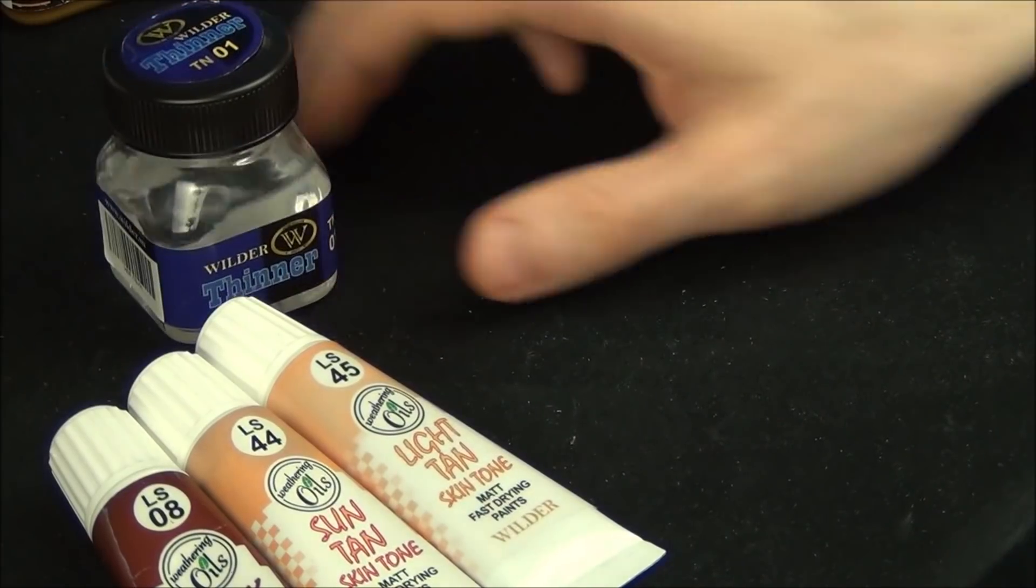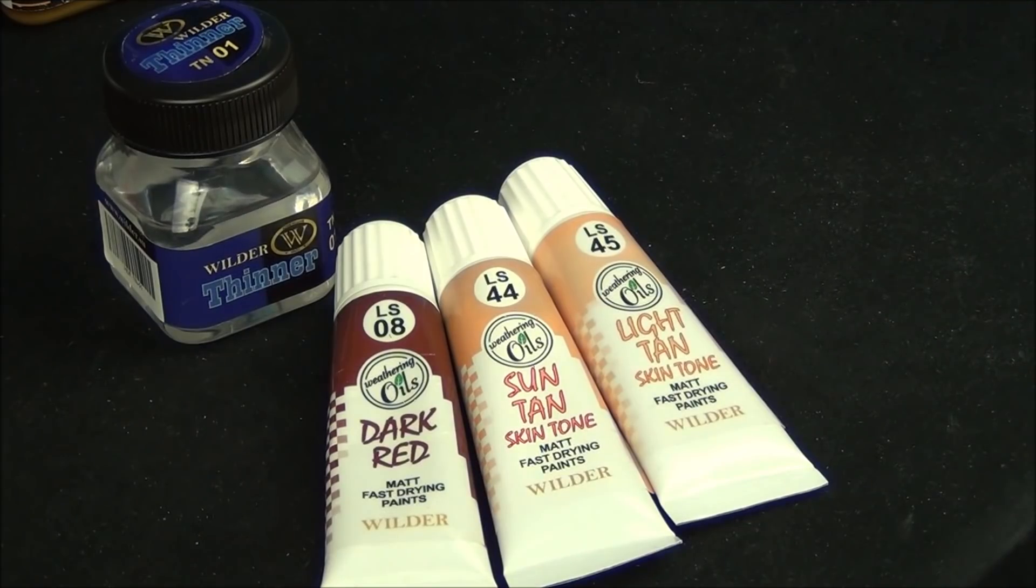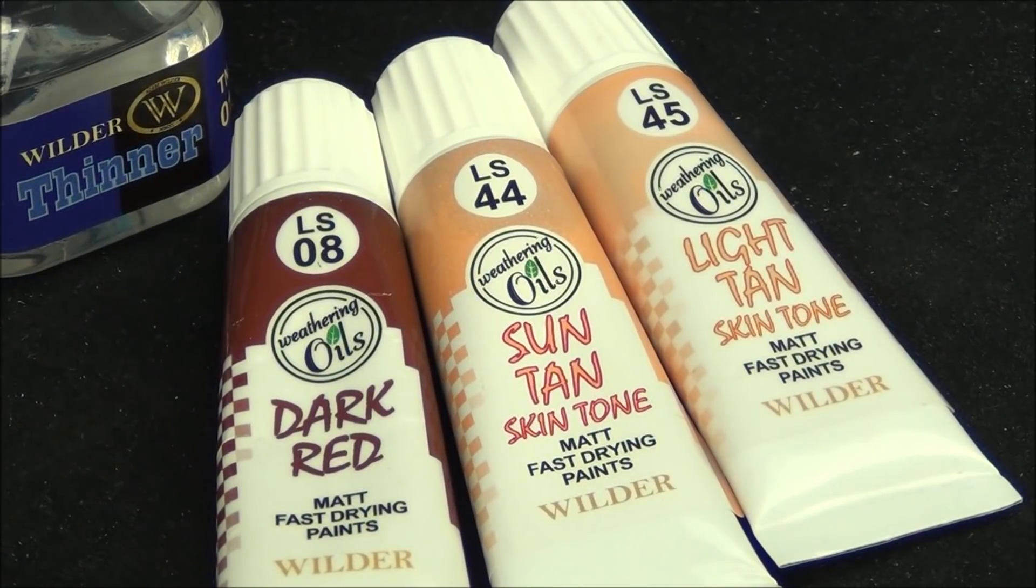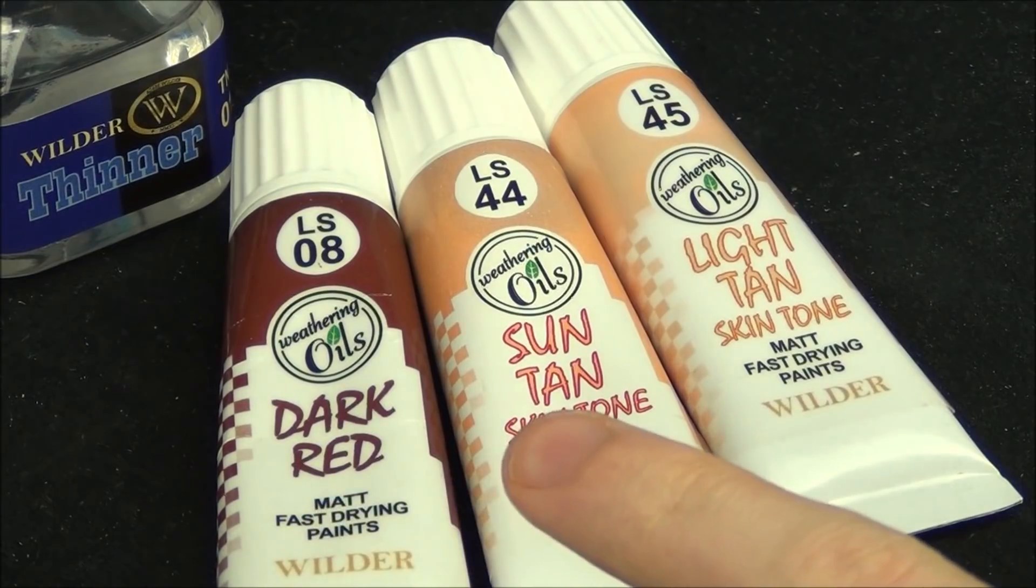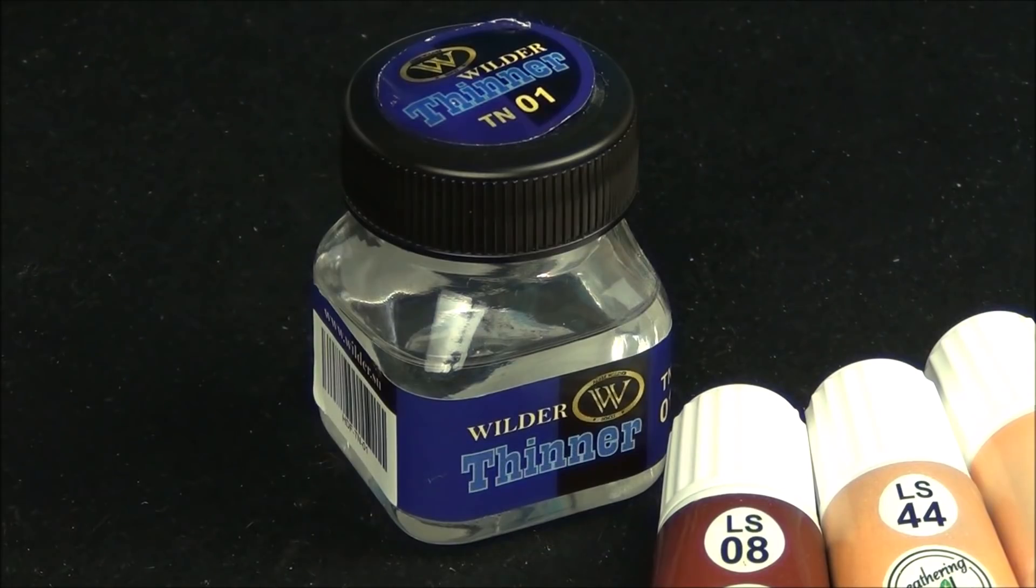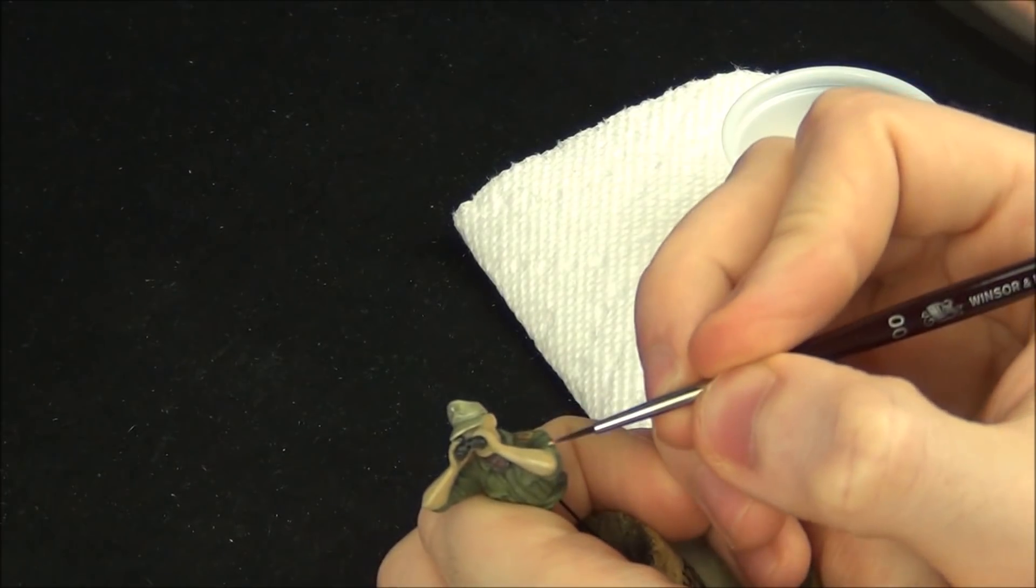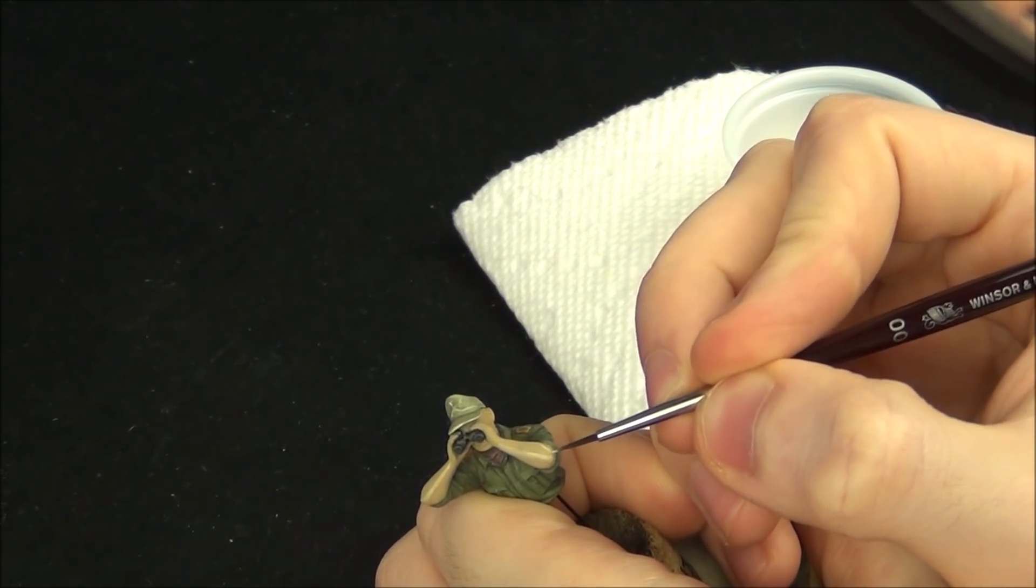For the shading on the flesh areas I'm going to use some oil paints instead of acrylics. I have a selection of Wilder paints here. I have a dark red and also two actual skin color oil paints. I also have some Wilder enamel thinner which is useful for blending the colors. I did have more oil paints on hand but I only used those three I showed beforehand.